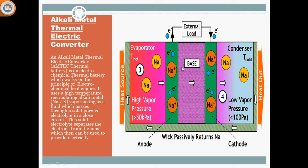The sodium ions pass through the wick, and when they reach the other side the electrons coming from the external load recombine with the sodium ions, forming neutral sodium again. The sodium then leaves the condenser. This is the working principle of the alkali metal thermoelectric converter, which also works on heat and is thus known as a thermal battery.